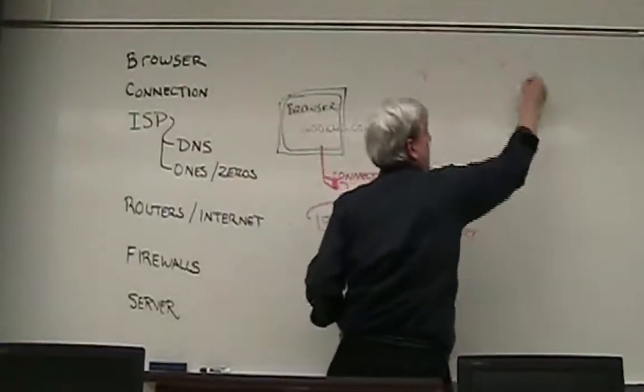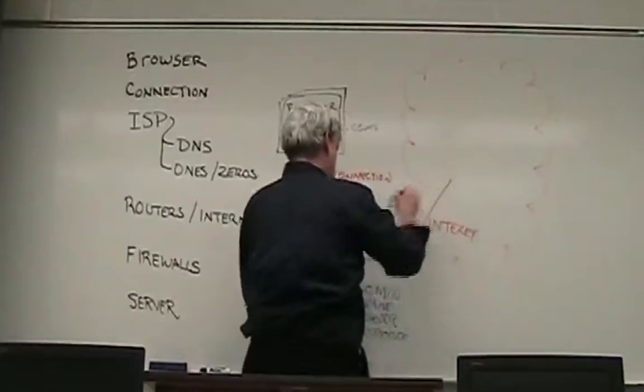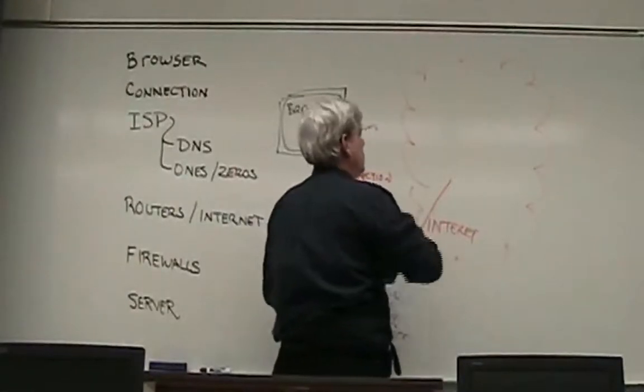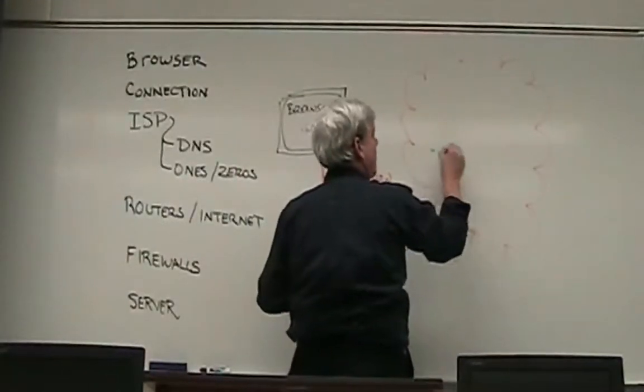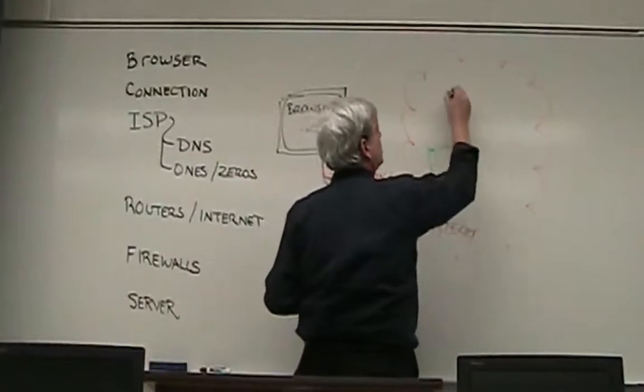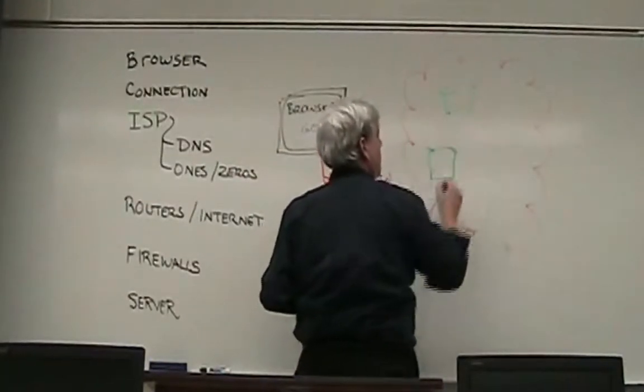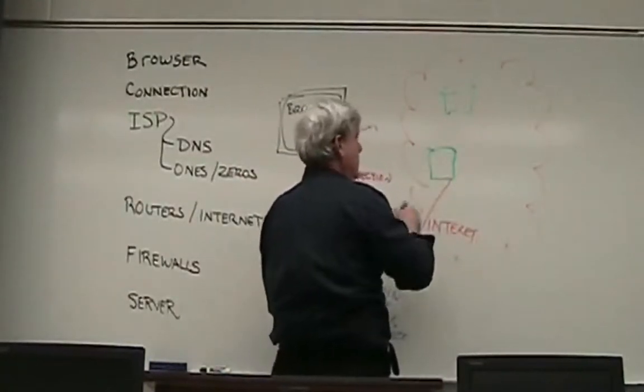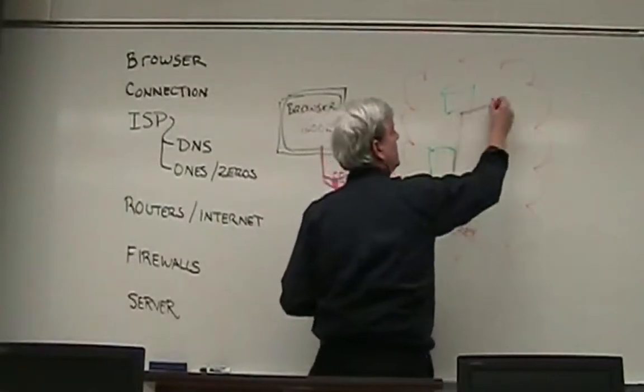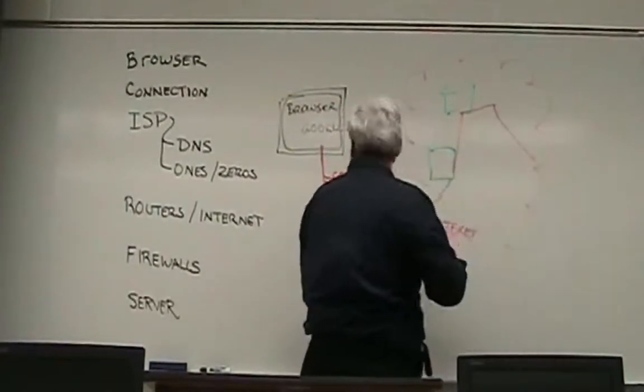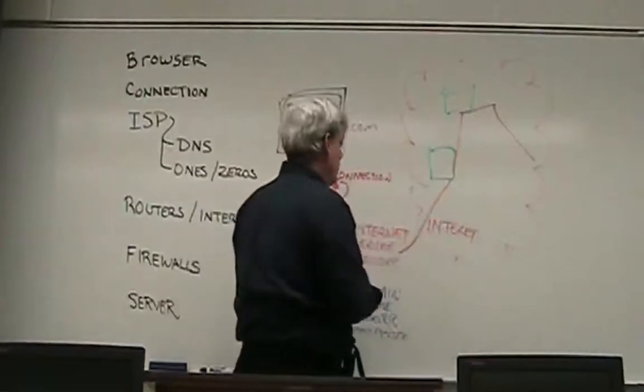Now, on the internet, which they usually call the cloud, there's a series of routers, which are also computers, that trigger the signal, the request, from one place to another, until it gets to where it's going.